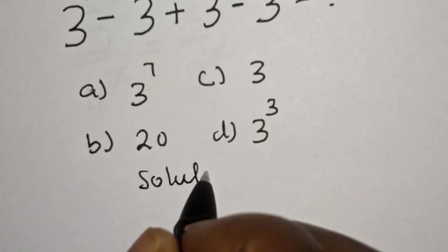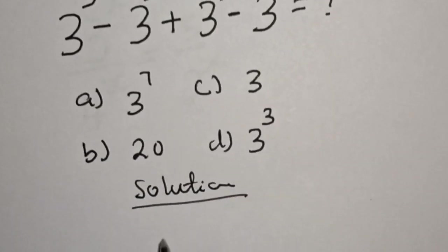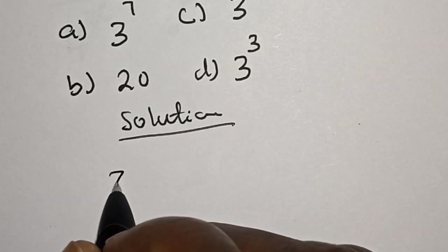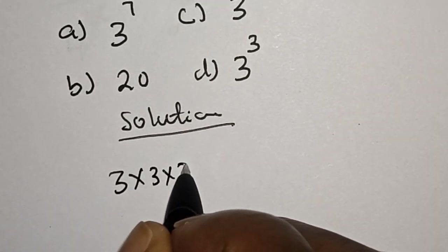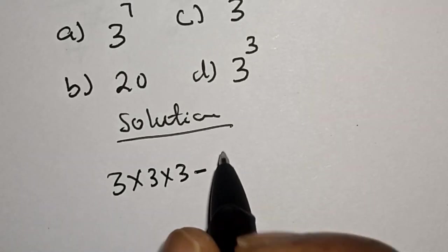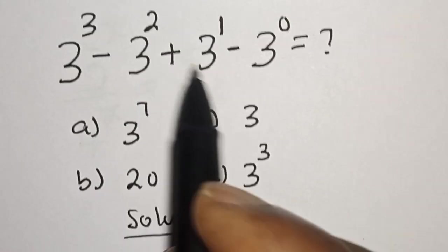Solution. 3 raised to power 3 can be written as 3 times 3 times 3 minus 3 squared can be written as 3 times 3